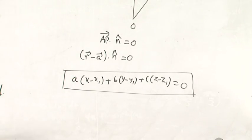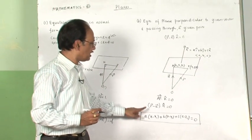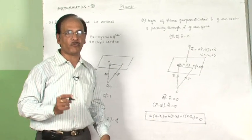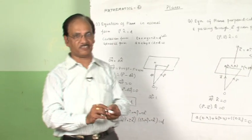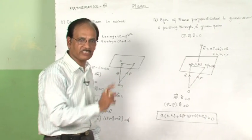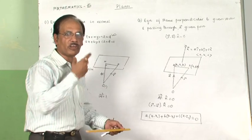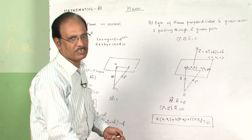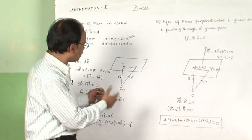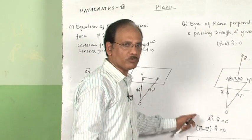This is a very important relation which will be very useful. We will be doing some problems pertaining to this equation later on. From this, what you have learned is that to find the equation of a plane you need two things: the point through which the plane passes and the direction ratios of the normal to the plane. Once you know these two things, you can find out any equation without memorizing formulas.